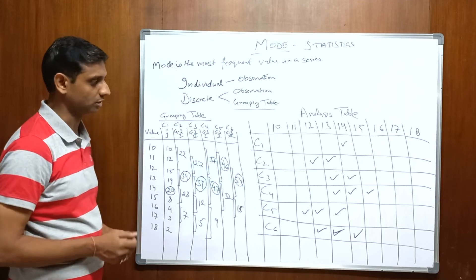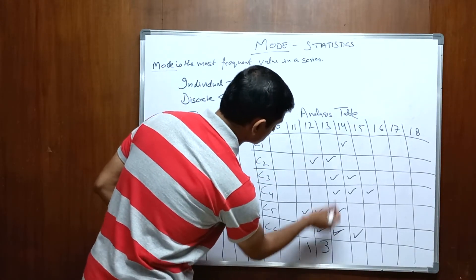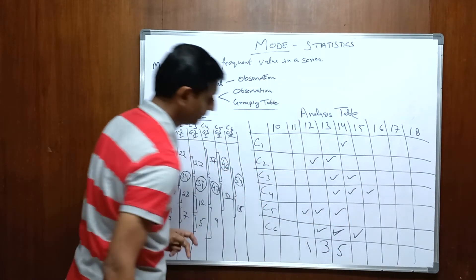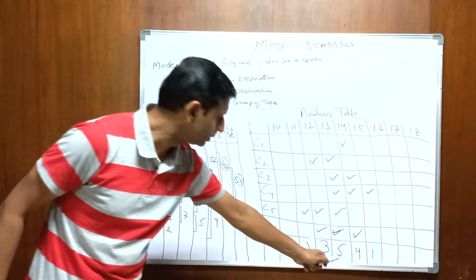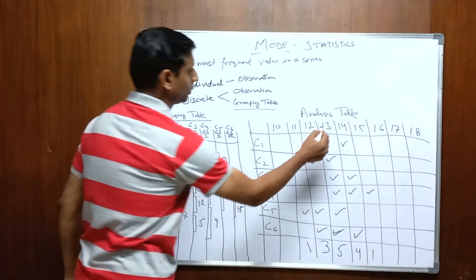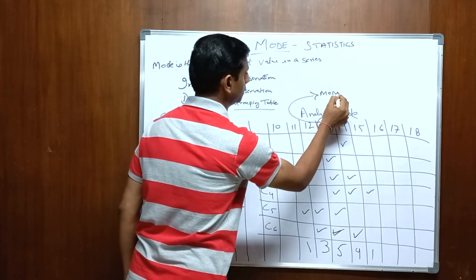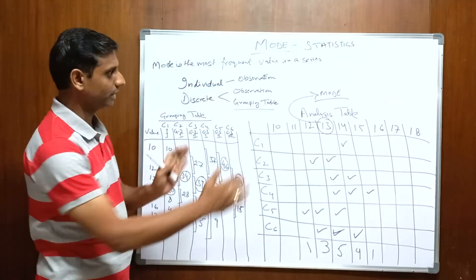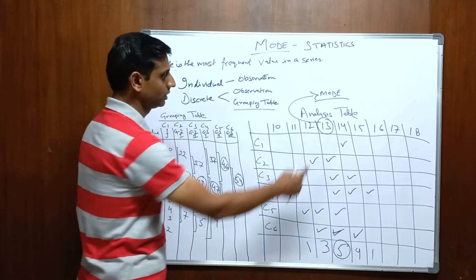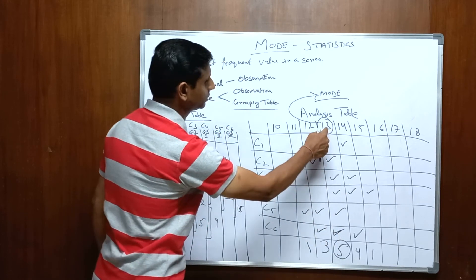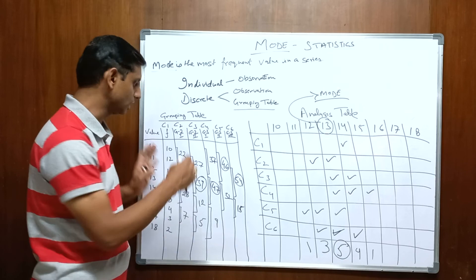Now let's see which value got the most ticks. Value 10 has no ticks, value 11 has 1 tick, value 12 has 3 ticks, value 13 has 5 ticks, value 14 has 4 ticks, and value 15 has 1 tick. Value 13 has got the maximum ticks — 5 ticks. So it simply implies that 13 is the mode for this value series. I hope you are able to understand how the grouping table and analysis table are created. Thank you.